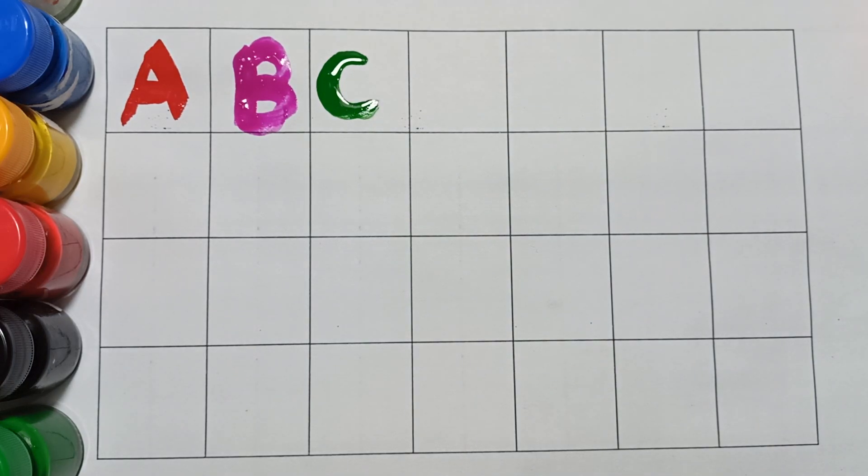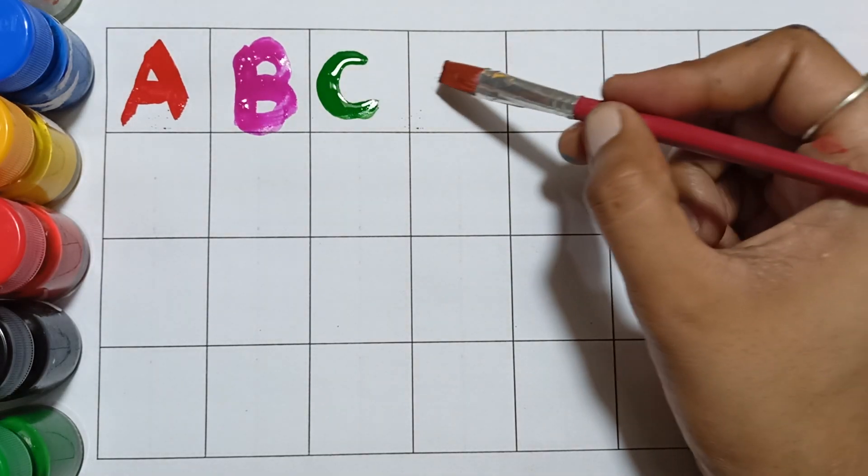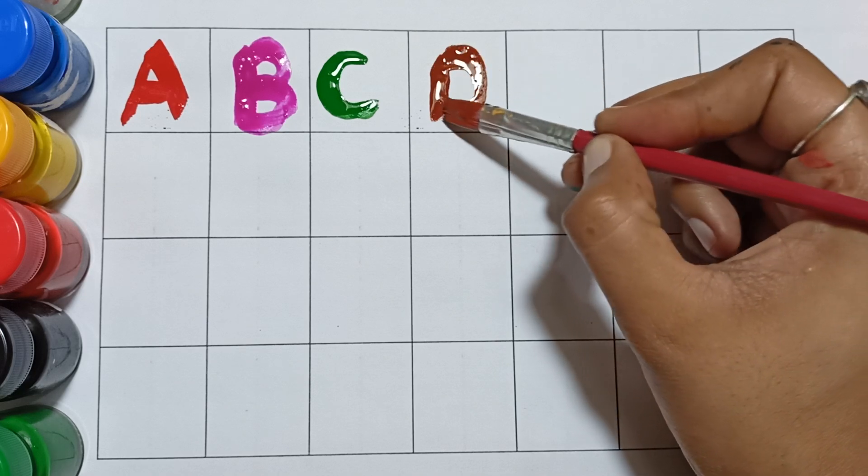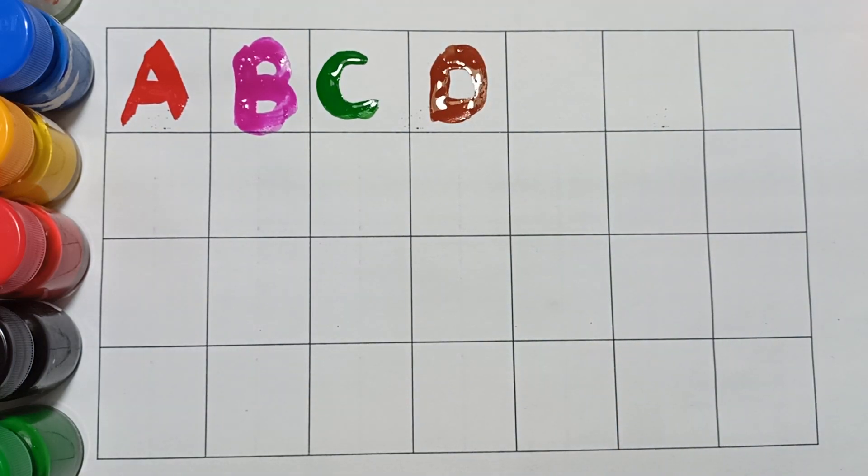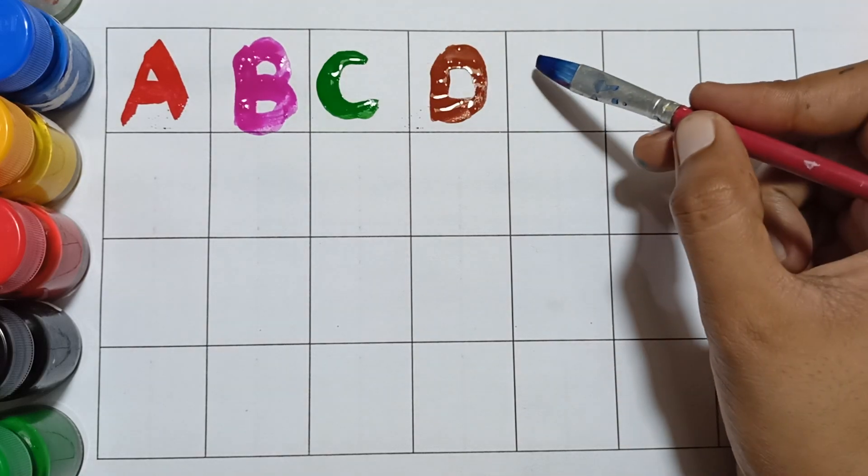D for dog, brown color. E for elephant, blue color.